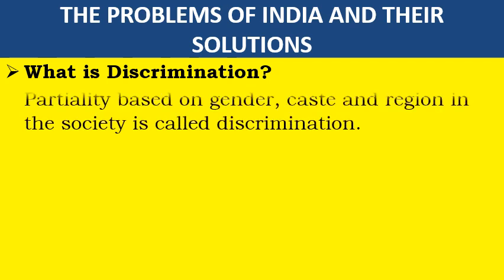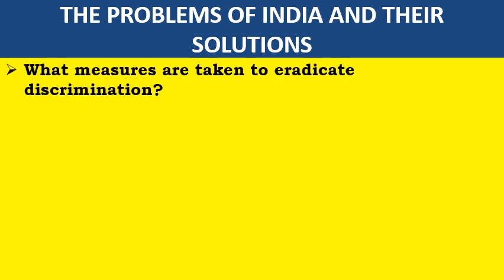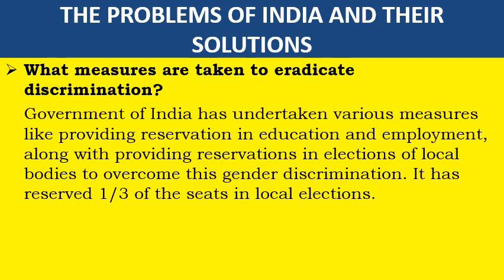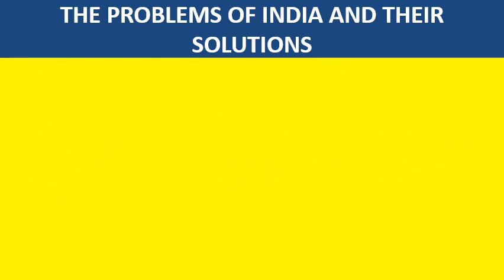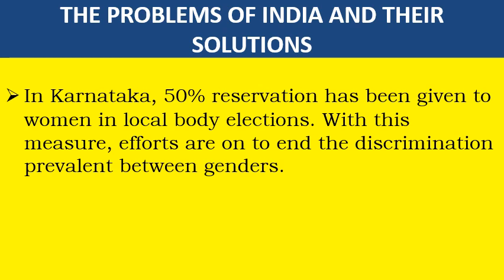What is discrimination? Partiality based on gender, caste, and region in the society is called discrimination. What measures are taken to eradicate discrimination? The government of India has undertaken various measures like providing reservation in education and employment, along with providing reservation in elections of local bodies. To overcome gender discrimination, it has reserved one-third of seats in local elections. In Karnataka, 50% of reservation has been given to women in local body elections. With this measure, efforts are on to end the discrimination prevalent between genders.